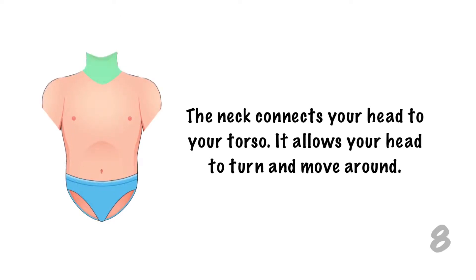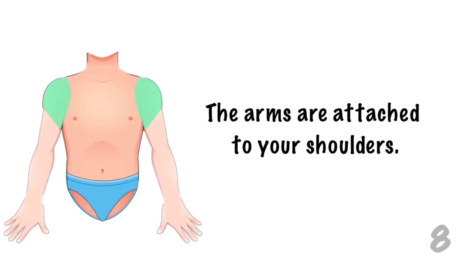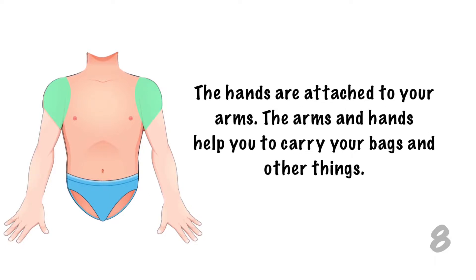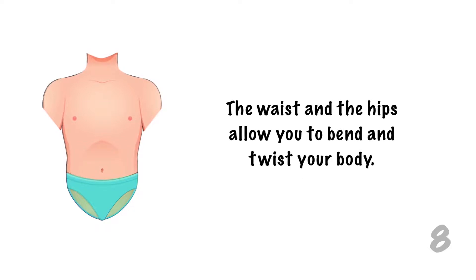The neck connects your head to your torso and allows your head to turn and move around. The arms are attached to your shoulders, and the hands are attached to your arms. The arms and hands help you to carry your bags and other things. The waist and the hips allow you to bend and twist your body.